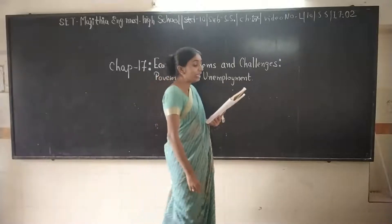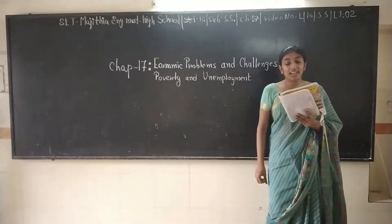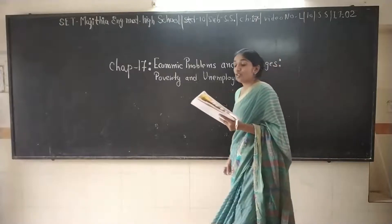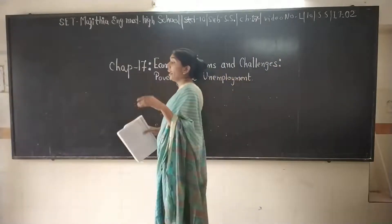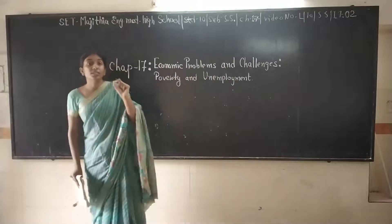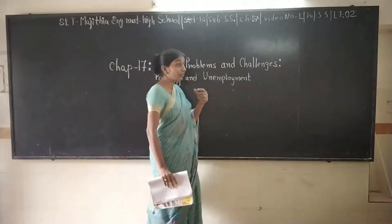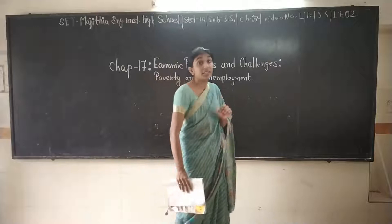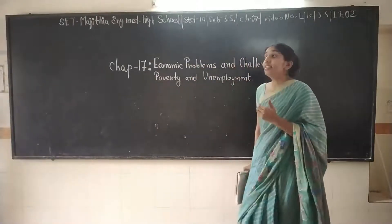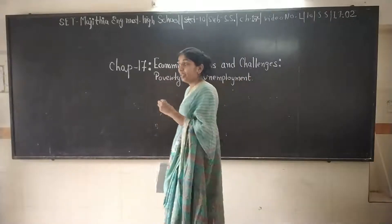This means at least this much per capita income should be made to cover expenditure. One person living in a village should have a per capita income of 860 rupees, and in cities it should be 1,000 rupees per capita.